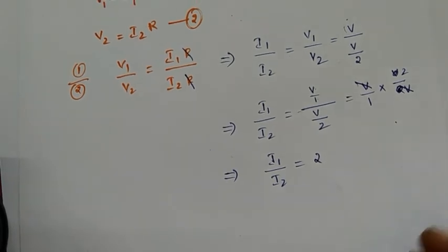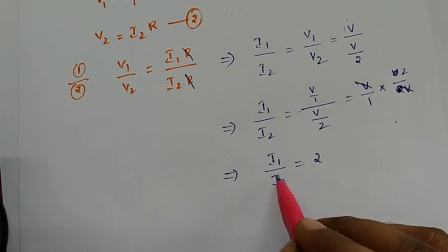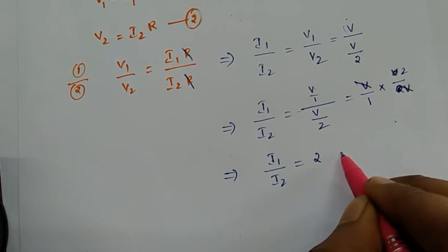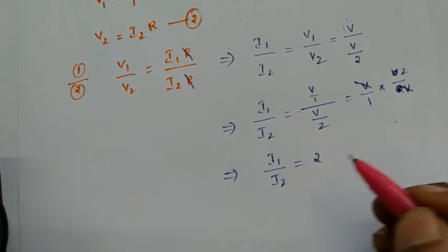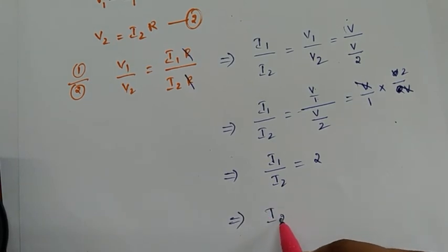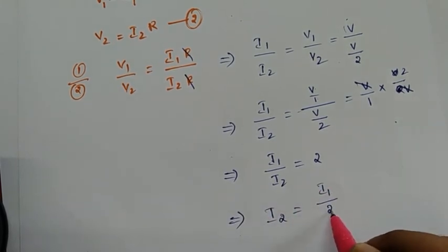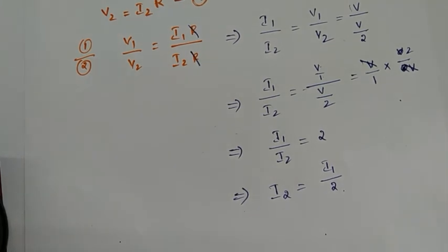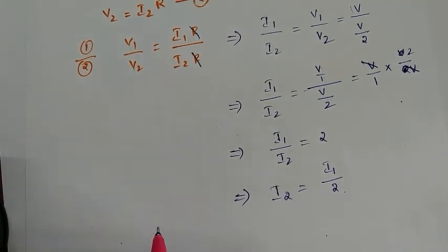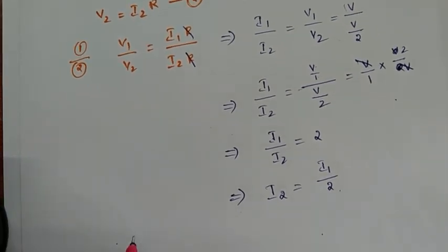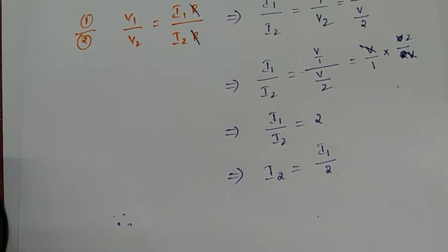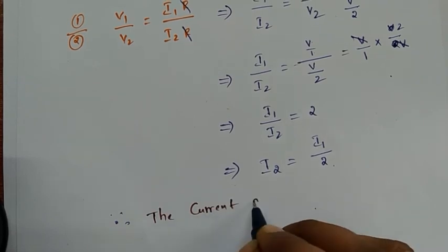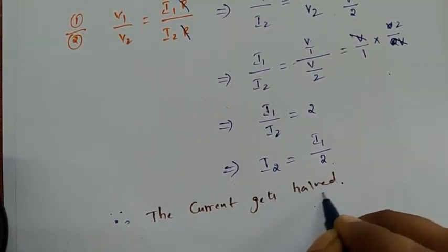What change will occur in the current? We need to find I2. Rearranging: I2 is equal to I1 divided by 2. That means if the voltage difference is halved, the current will also be halved when resistance is the same. Therefore, the current gets halved. Thank you.